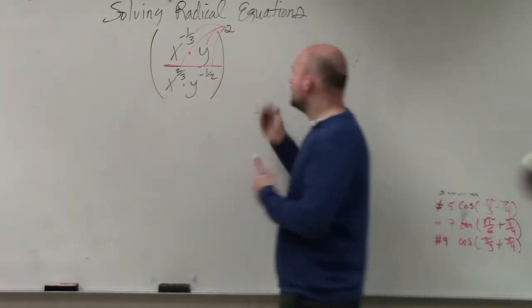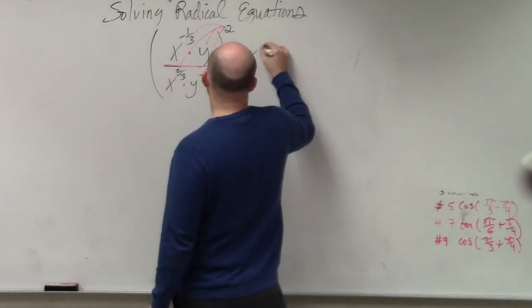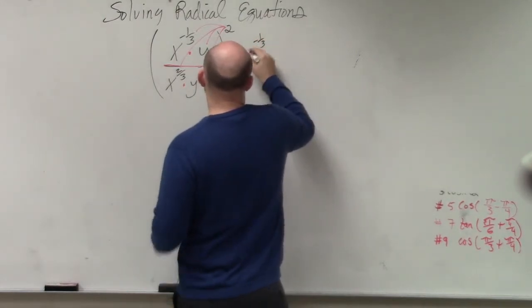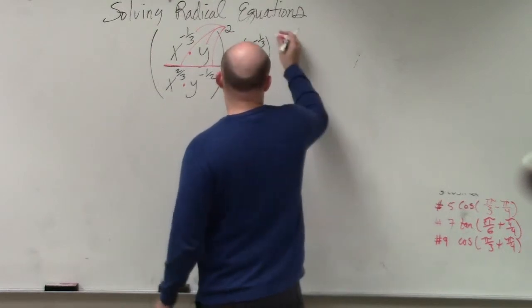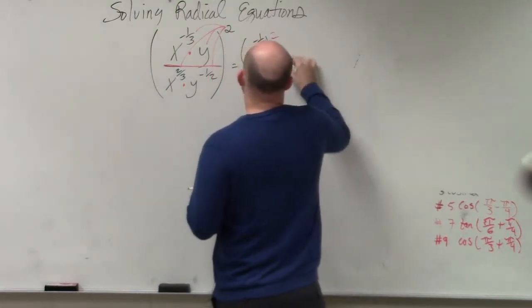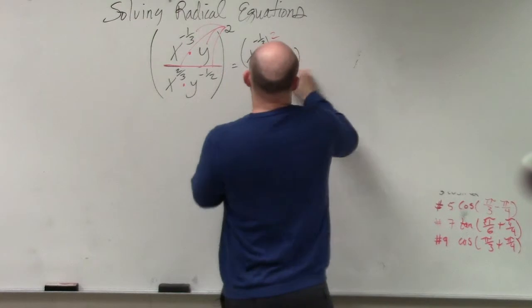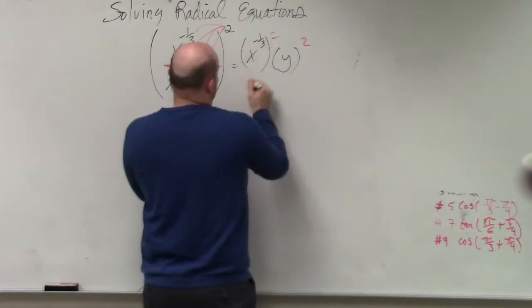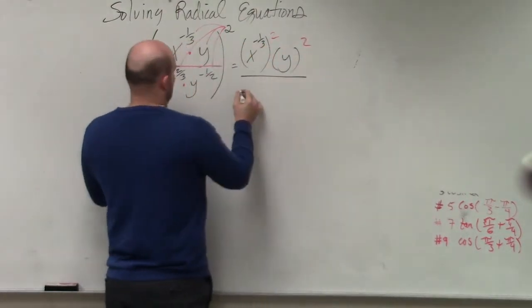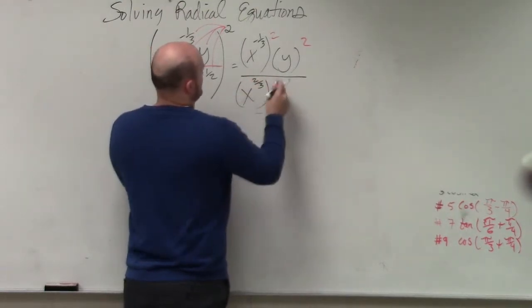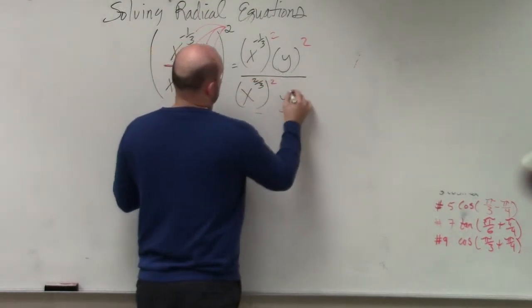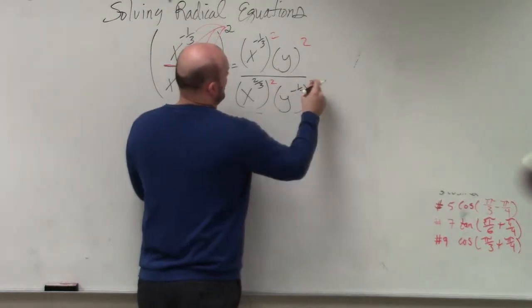So therefore I now have x to the negative 1 third squared times y squared all over x to the 2 thirds squared and y to the negative 1 half squared.